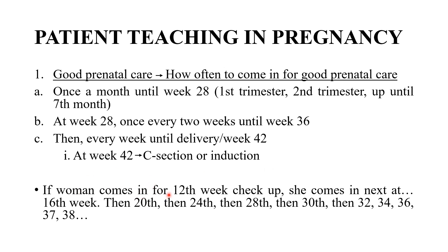For example, if a woman comes in at 12 weeks, her next visit is at 16 weeks — one month gap. Then 20 weeks, 24 weeks, 28 weeks — each one month apart. After 28 weeks, visits are every two weeks: 30, 32, 34, 36. After 36 weeks, visits are every week: 37, 38, 39, 40.